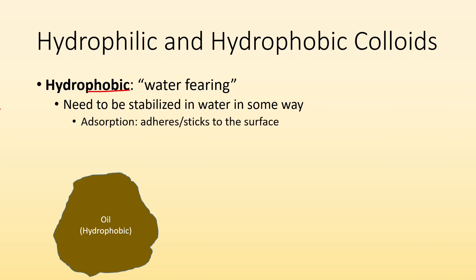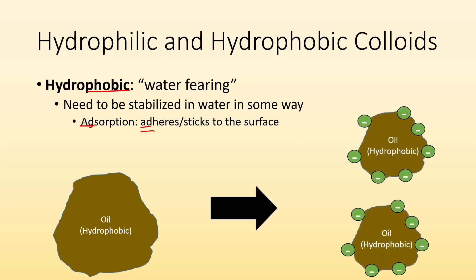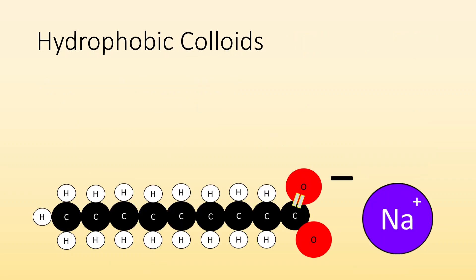So if we had some ions that might adhere to the surface of these particles, well, if we did that, these particles would be repelled from each other because they have the same negative charge, and that's going to keep them separated. It's going to keep them suspended in the water. So the ions are adsorbed to the surface and they can help keep large particles separated.